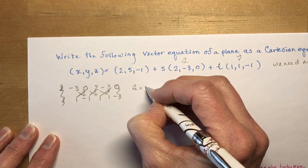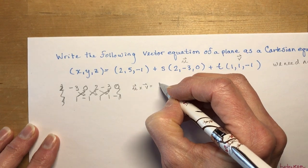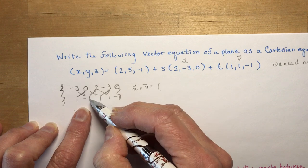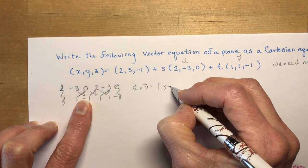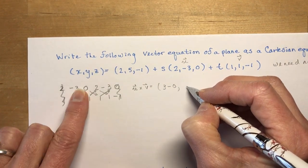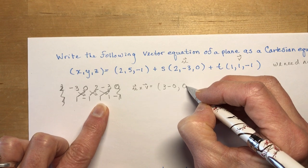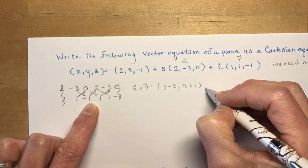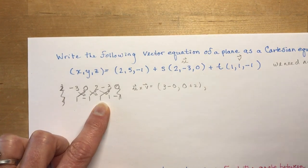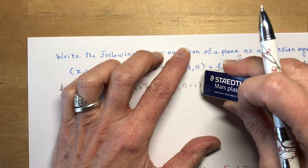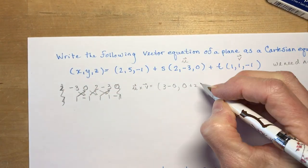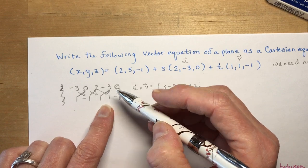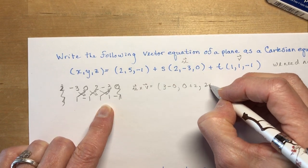So u crossed with v is going to be, let's look here. We have minus 3 times minus 1. So that's 3 minus 0. And then we'd have 0 times 1 is 0. And minus minus 2 is plus 2. 0 plus 2, comma. And our z coordinate is going to be 2 times 1 is 2 plus 3. 2 plus 3.